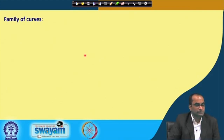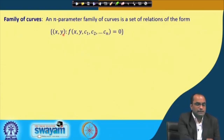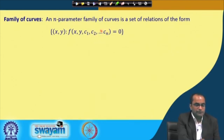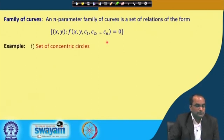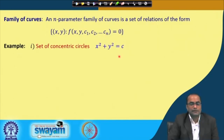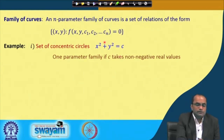Before that we need to introduce the family of curves. An n-parameter family of curves is a set of relations of the form f(x, y, c₁, c₂, ..., cₙ) = 0, where x and y are related through n parameters. Changing these parameters gives different curves — that is what makes it a family of curves. For example, the set of concentric circles x² + y² = c is a one-parameter family, where c takes non-negative real values.